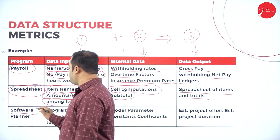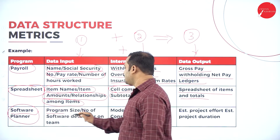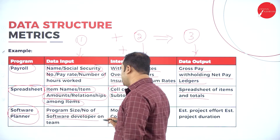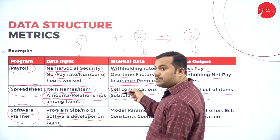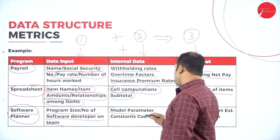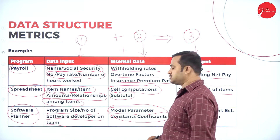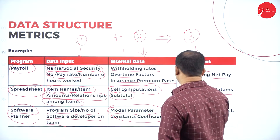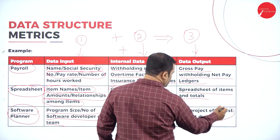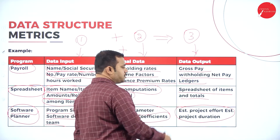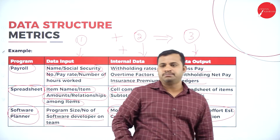Then we have the software planner. What is the software planner? This requires program size or number of software developers on the team. The implicit data considered includes model parameters, constant coefficients. All these are some of the implicit data considered here. Finally, we have estimated project effort and estimated project duration, which are considered as data output.